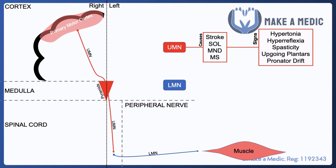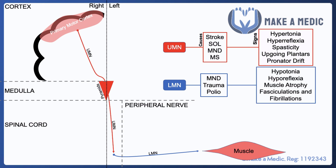Diseases that affect lower motor neurons include other types of motor neuron disease, trauma, and more rarely now, polio. The manifestations are sort of the opposite: you get reduced tone, reduced reflexes, marked muscle atrophy, and you also get unregulated erratic contraction of bundles of muscle fibres called fasciculations.